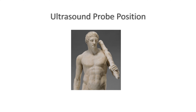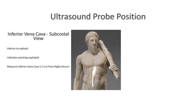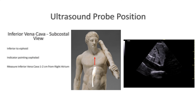Let's talk about ultrasound probe position. As part of the subcostal view you should also evaluate the inferior vena cava. Start with having the patient in the supine position, then place the probe just inferior to the xiphoid process with the indicator of the probe pointing cephalad. You should be getting an image looking like this.